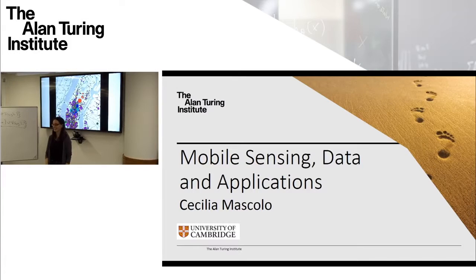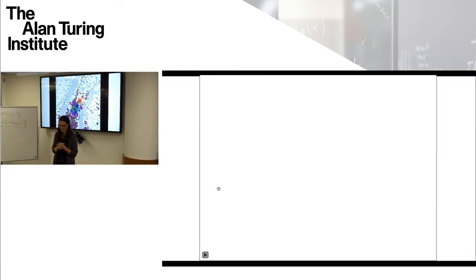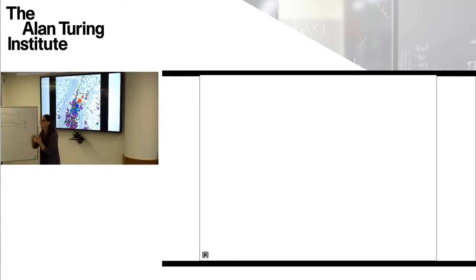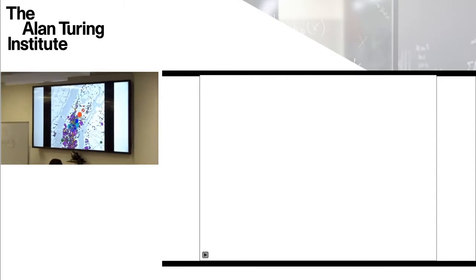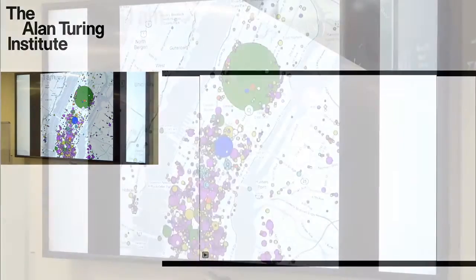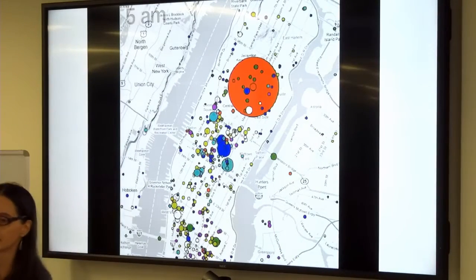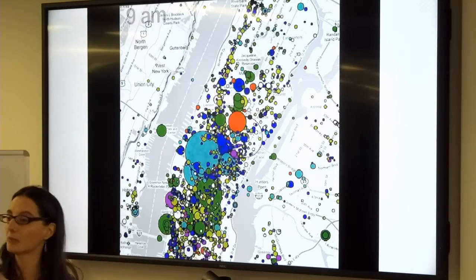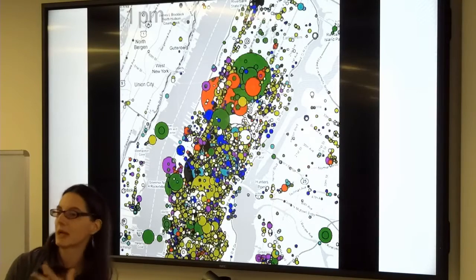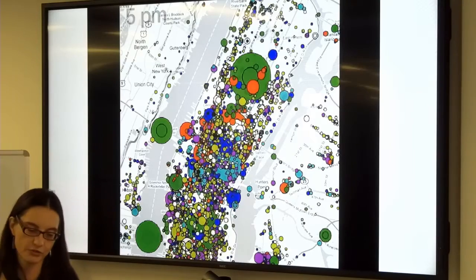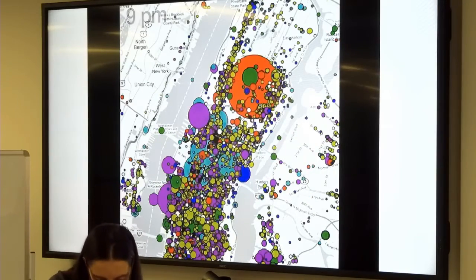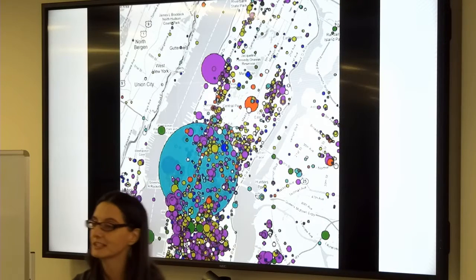My first slide is an animation. This data is collected from Foursquare, which is a platform similar to Facebook that allows people to tell their friends where they are — so I can check in at the Alan Turing and tell my friends where I am. This is New York at various stages during the day. The size of the circles indicates how many people are checking in at that particular location; the colors indicate the semantics — parks, stations, universities, museums — and at different times you can see the city is used in different ways.